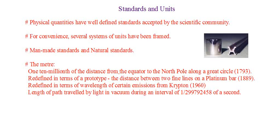For the distance from one planet to another, or from the sun to a planet, we prefer the astronomical unit. For distances between stars we prefer light years or parsec. So even though in all these different cases the physical quantity is distance, we use different units that are suitable or convenient in that particular context.